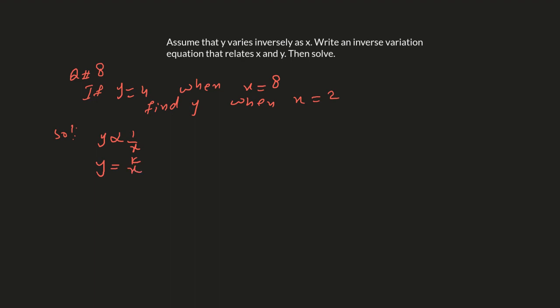Now we have to figure out the value of k. It's given that y equals 4 and x equals 8, so just substitute these two values: y is 4 and x is 8. Then multiply 8 on both sides, so k equals 8 times 4, which is 32. That's the value of k.